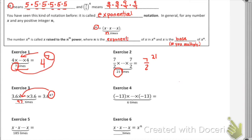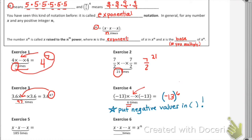For exercise number four, we've got a special case because we have a negative number to a power — that's negative 13, with the dot-dot-dot indicating it continues for six times. You'd think to write negative 13 to the sixth power, but the special case is that when we have a negative number to an exponent, we need to put parentheses around that value. That tells us it is the negative 13 being repeated and not just the opposite of 13. So put negative values in parentheses to raise them to a power.